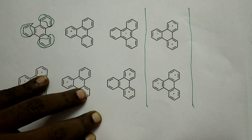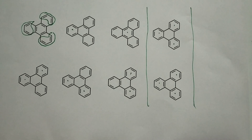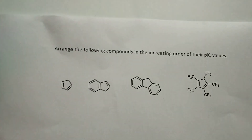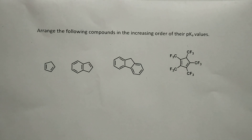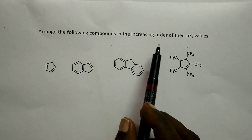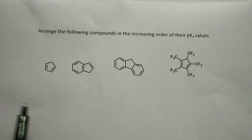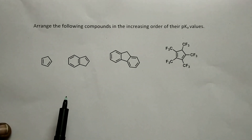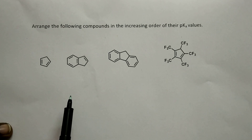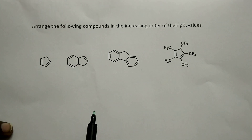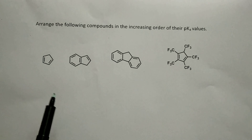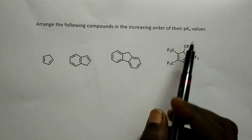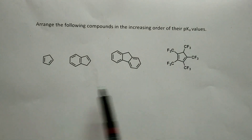Now let us see a problem involving annulation. Arrange the following compounds in the increasing order of their pKa values. pKa represents acid strength — lower the pKa, stronger the acid; higher the pKa, weaker the acid. So increasing order of pKa means decreasing order of acid strength.